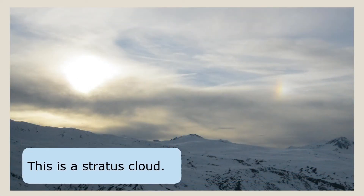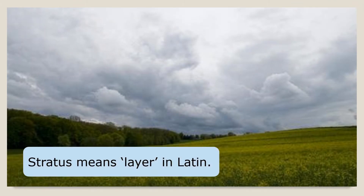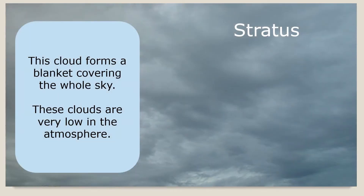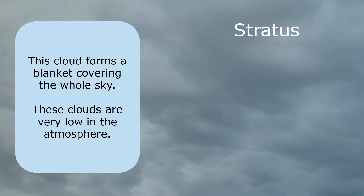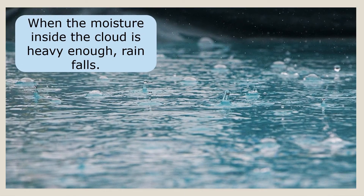This is a stratus cloud. Stratus means layer in Latin. This cloud forms a blanket covering the whole sky. These clouds are very low in the atmosphere. When the moisture inside the cloud is heavy enough, rain falls.